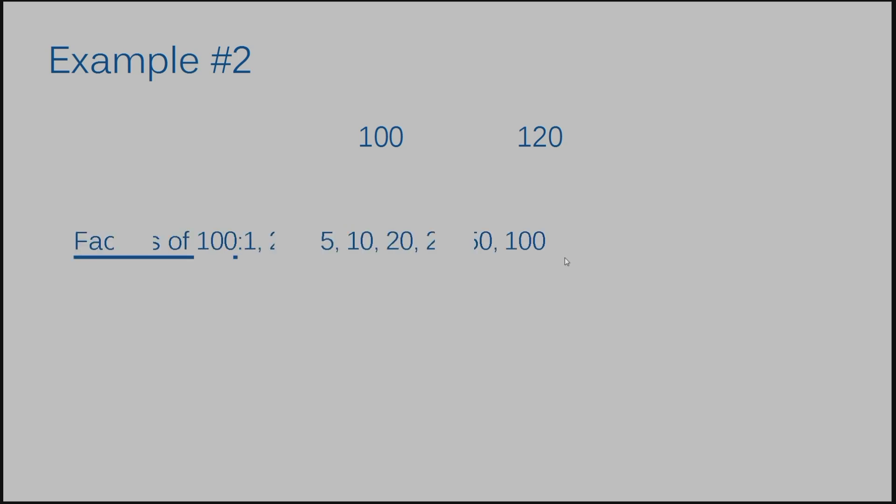Let's move on to example number 2. We have 100 and 120. We are going to have a lot of factors to list. The factors of 100 are 1, 2, 4, 5, 10, 20, 25, 50, and 100.